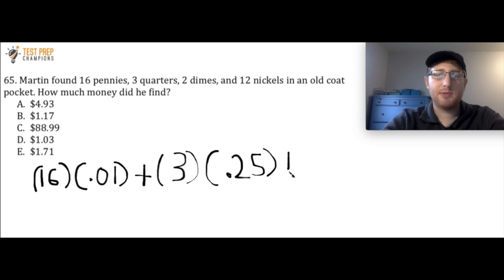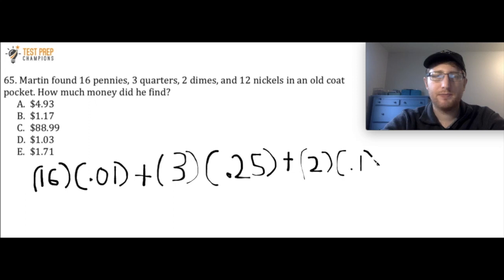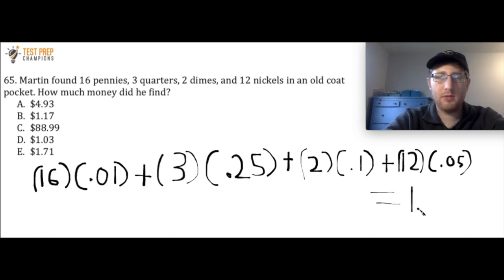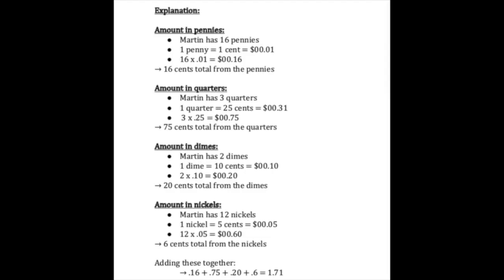Now for the dimes — a dime is worth 10 cents, and there are 2 dimes, so I would do 2 times .1 to account for the dimes. Last, we've got our nickels. There are 12 nickels, and 1 nickel is worth 5 cents, so I'd use .05. If you put this all in your calculator, we get 1.71, so answer choice E is the right answer. I'll put the written solution on screen for you.